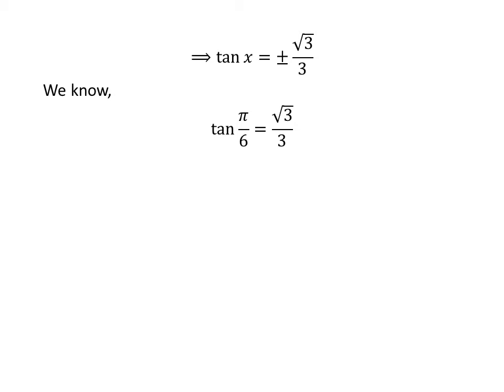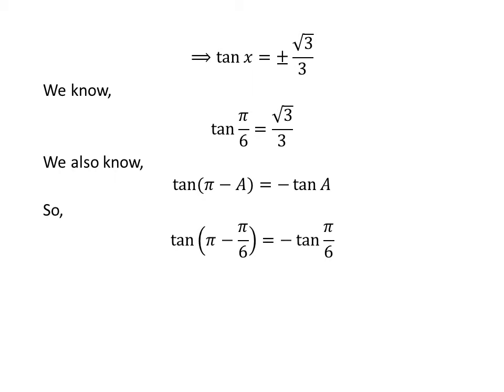We know the value of tangent of pi upon 6 is square root of 3 upon 3. We also know the trigonometric identity tangent of pi minus a is equal to minus tangent of a. The proof of this identity is given in the video appearing in the upper right corner, and the link is also given in the description section.